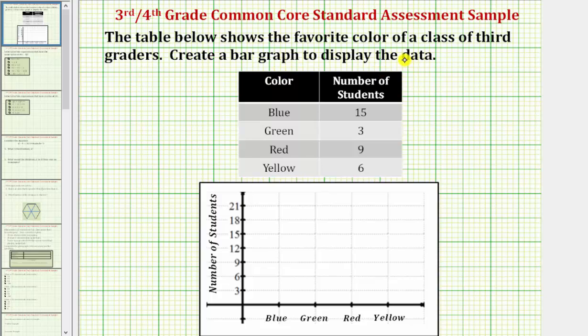The table below shows the favorite color of a class of third graders. Create a bar graph to display the data. Looking at the table first, notice how we have the color in this first column and the number of students that prefer that color in the second column.